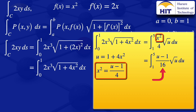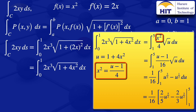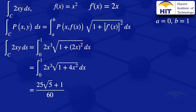Taking the constant 1 over 16 outside and applying laws of exponents, the expression becomes one sixteenth times the integral from 1 to 5 of u to the power 3 over 2 minus u to the power 1 over 2 with respect to u. Integrating yields one sixteenth times 2 over 5 times u to the power 5 over 2 minus 2 over 3 times u to the power 3 over 2, evaluated from 1 to 5. The final result is 25 root 5 plus 1 divided by 60.